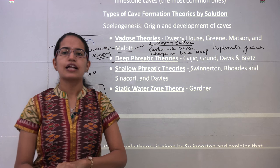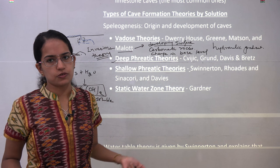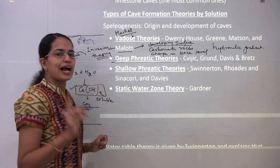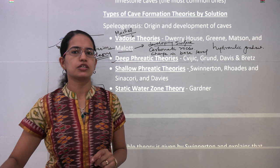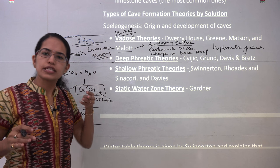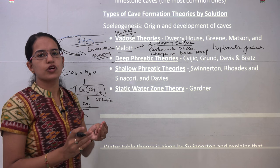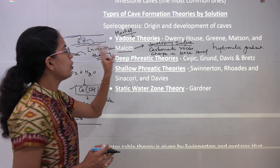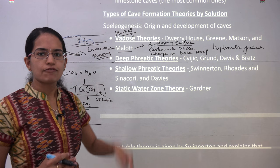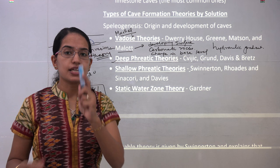The vadose theory is very simple to understand and very obvious, because all the caves are formed in the vadose zone. Marlett gave an interesting concept under vadose theory: he explained there can be no underground circulation of water if there are no caves. For underground circulation of water to be present, there should be some pathway, and that pathway is the route through which water moves — which can be in the form of caves. So he said caves are essential for underground circulation to take place. These two were the major propounders of the vadose theory. Vadose theory under Mallett was later propounded by Woodworth, Crawford, and numerous others who worked on the same concepts.